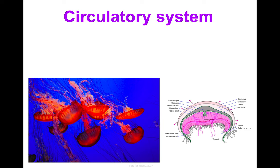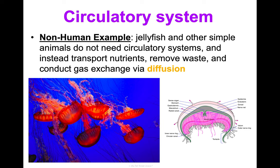For a non-human example: jellyfish and other simpler organisms don't need circulatory systems like ours. Instead, they transport nutrients, remove waste, and conduct gas exchange entirely via diffusion. Because their structure is simpler, they're able to diffuse those things in and out more easily and don't require as complex a transport system as we do.